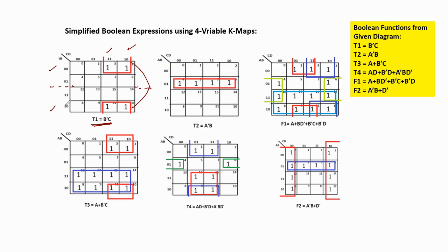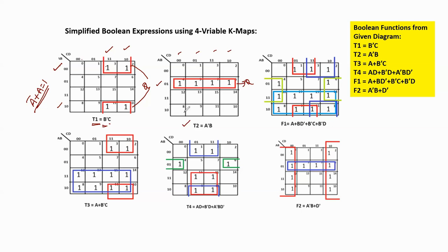For t2, a quad of four 1s: this group lies in one row and all columns. The row has a=0, b=1 meaning a'b. For c, d: two zeros and two ones each, so both c and d are skipped. Therefore the simplified expression for t2 = a'b. For t3, eight ones form an octet: the first group gives a (row a=1, b varies, all columns so c,d skipped). The second quad lies in two rows and two columns with b=0 giving b', and c=1, d varies giving b'c. Therefore t3 = a + b'c.